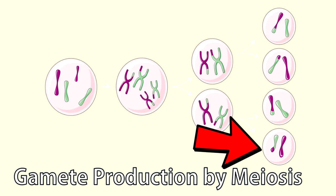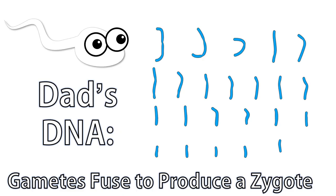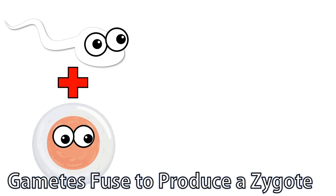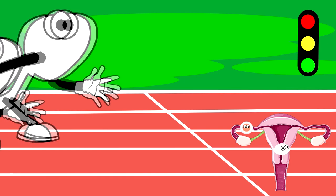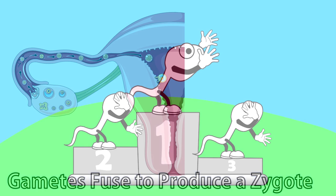In males, gametes are called sperm, while in females, they're called ova, or eggs. Following intercourse, millions of sperm are deposited into the female reproductive tract and race towards the ovum. However, only around 100 of these make it through the female reproductive tract and reach the egg, and usually only one sperm can fertilize each egg. Ultimately, the sperm does this by eating through the protective layers surrounding the ovum, fusing to release the genetic material and producing a zygote.